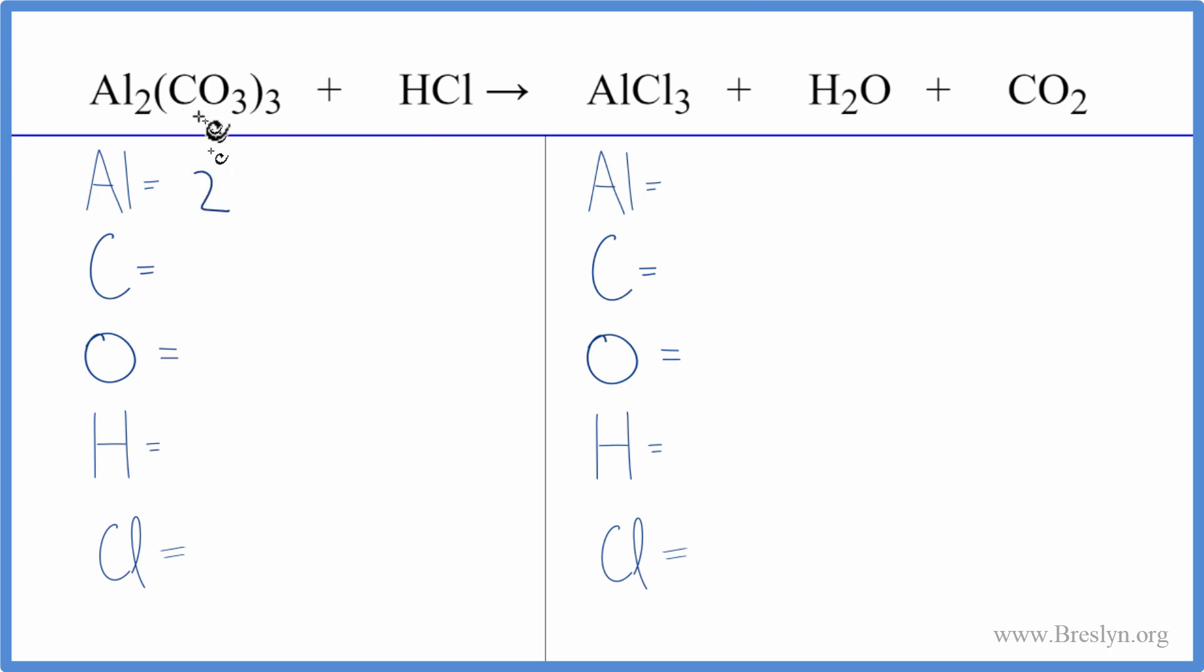We have two aluminum atoms. We have three times the one carbon, so we have three carbon atoms, and then three times three, nine oxygen atoms. Then we have one hydrogen and one chlorine.